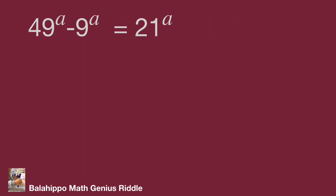The given information: 49 power of a minus 9 power of a equals 21 power of a. How should we handle this? Looking at the numbers 49, 9, and 21, we find the common factors 7 and 3. That means 49 equals 7 squared, 9 equals 3 squared, and 21 equals 7 times 3.